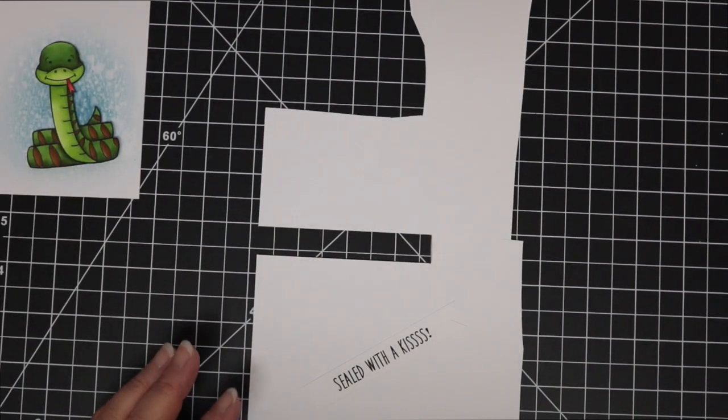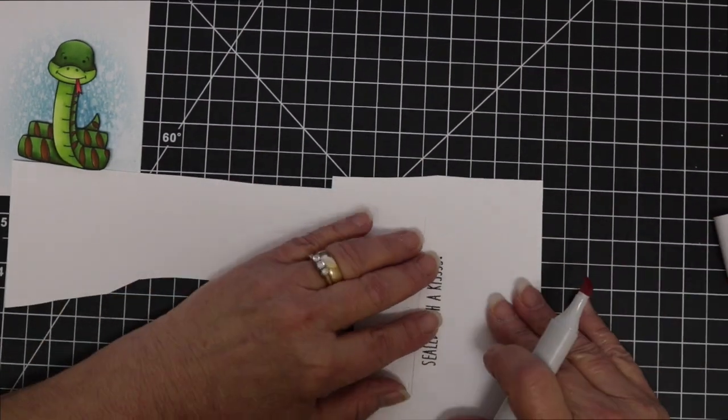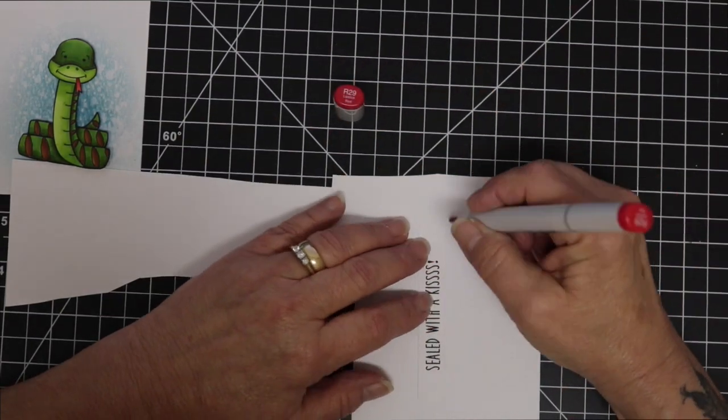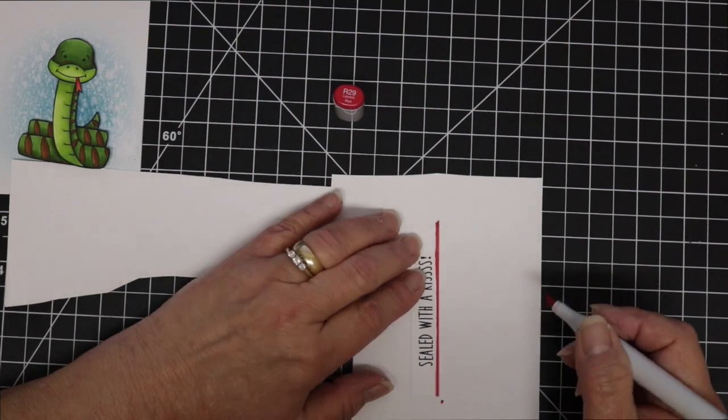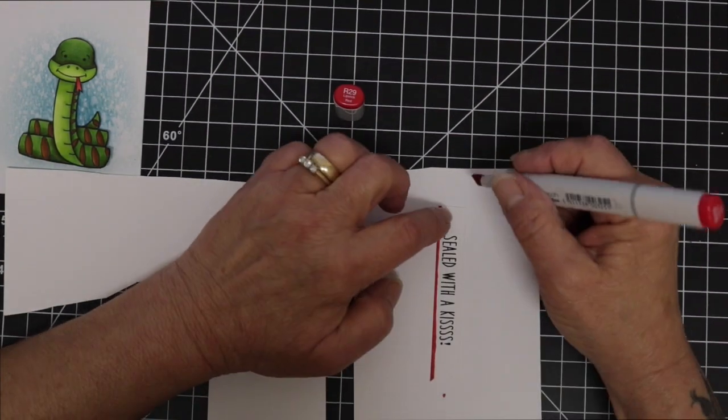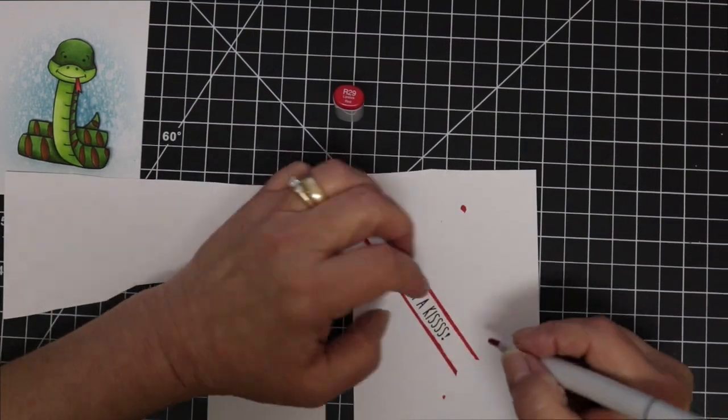So I just brought in those same red Copic markers and started coloring my little banner there. I used the R29, the R24 and then I brought in the R27 just to give me a little bit better blend.